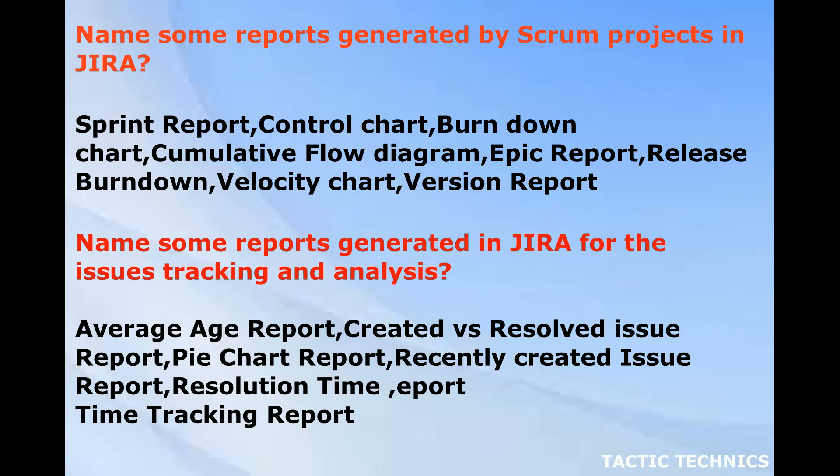Reports generated by Scrum projects in Jira: sprint report, control chart, burndown chart, cumulative flow diagram, epic report, release burndown, velocity chart, and version report.